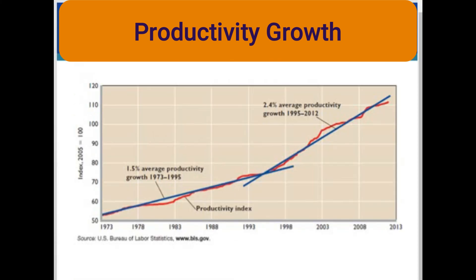This graph reflects the growth in U.S. productivity between 1973 and 2012. Average productivity was 1.5% until 1995, but after 1995, the average productivity growth rate increased to 2.4%.